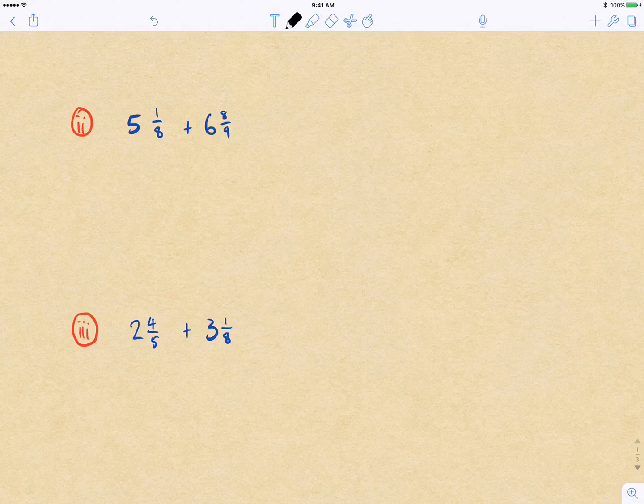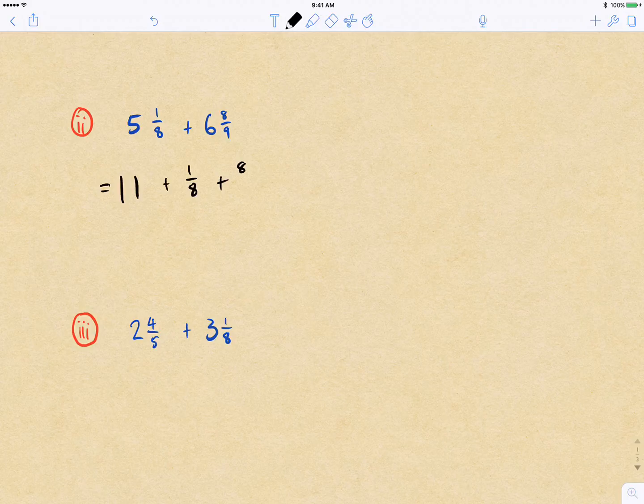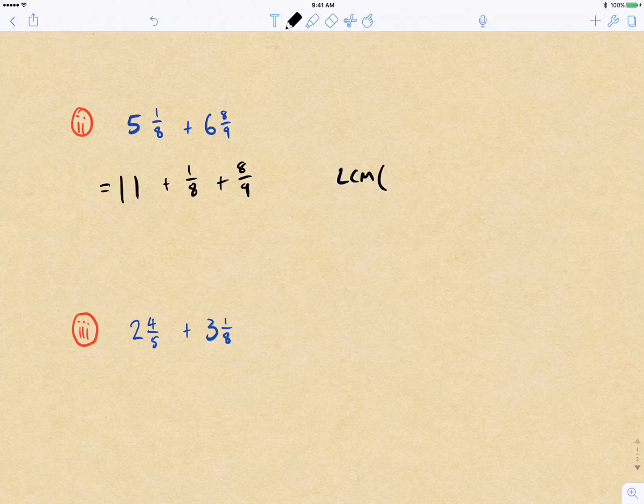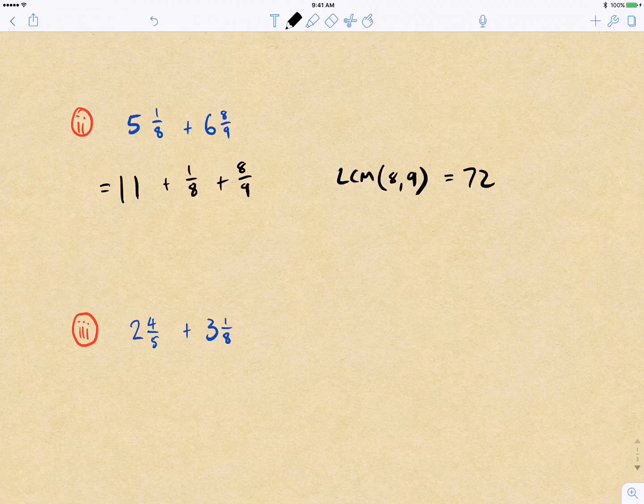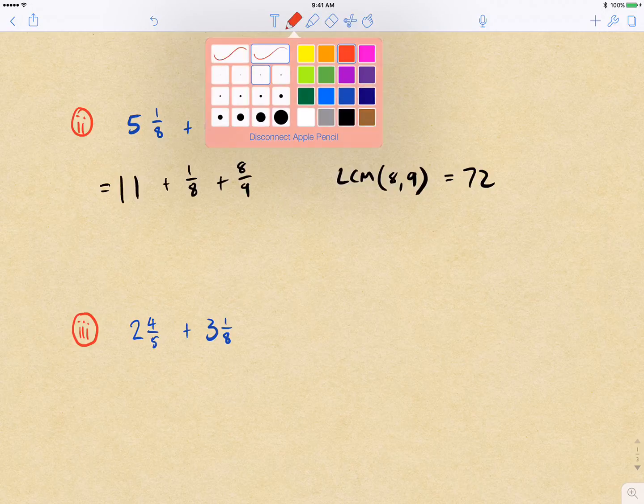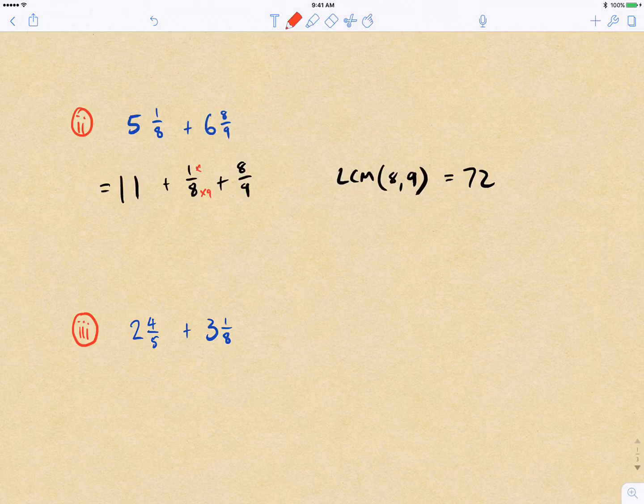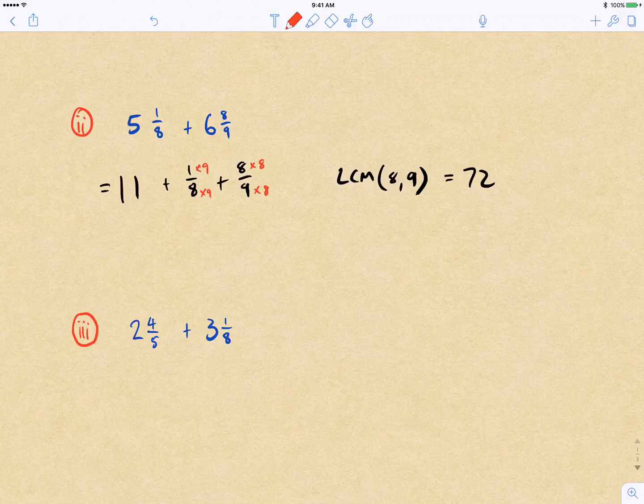So we've got 5 and an eighth plus 6 and 8 ninths. So we add the 5 and the 6 together equals 11, and then we've got plus an eighth plus 8 ninths. We need to add eighths and ninths together, so we look for the lowest common multiple of eighths and ninths. Or any common multiple works, but the lowest one is usually the best. Or I know in this case, 8 times 9 is the lowest common multiple.